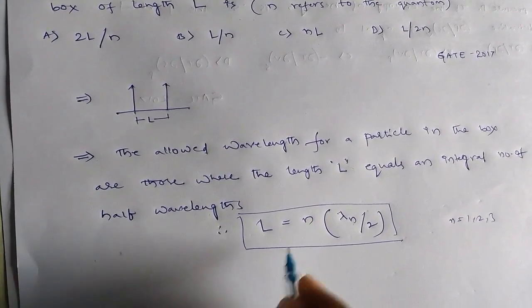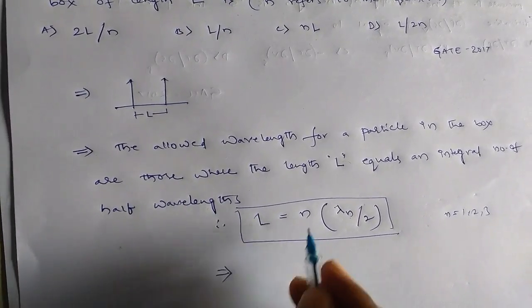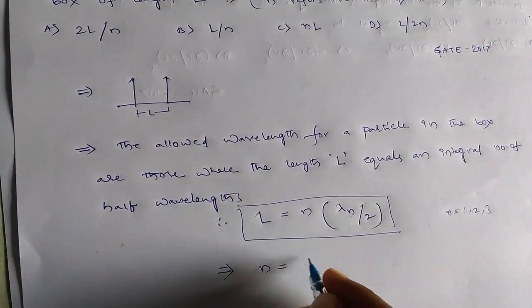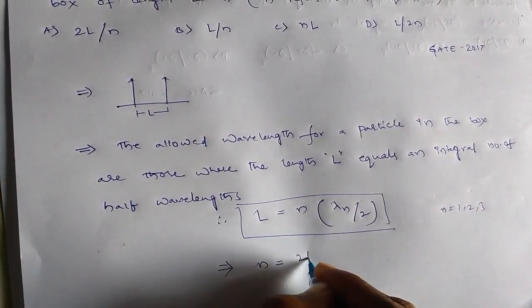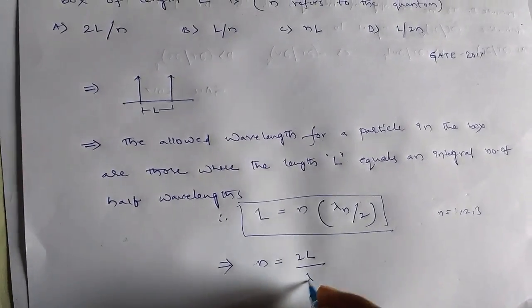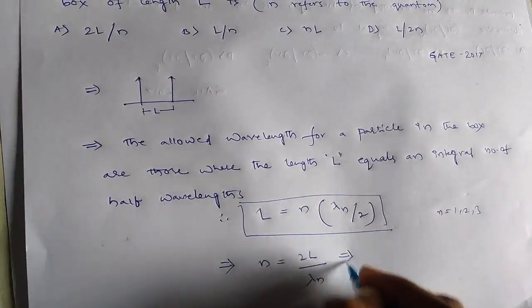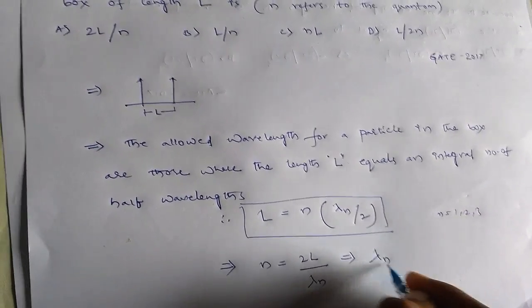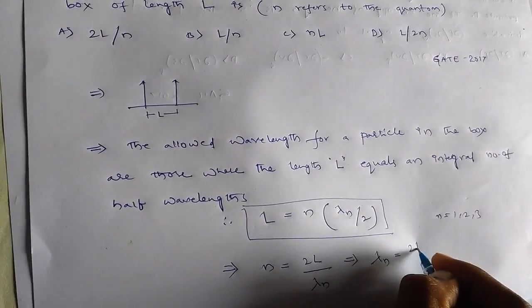And then from this, n is equal to 2L by lambda n. So from this we can write lambda n equals to 2L by n.